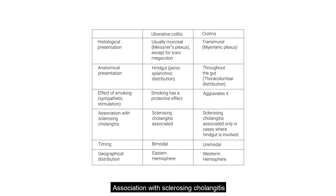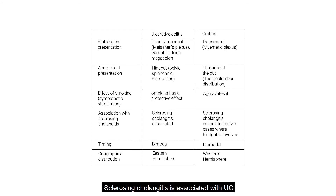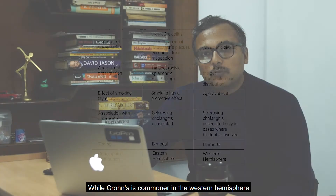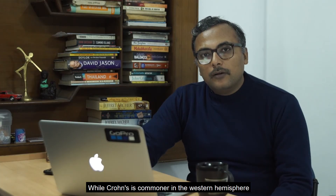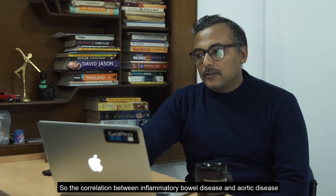Sclerosing cholangitis is associated with ulcerative colitis, but it is associated with Crohn's only in cases where the hindgut is involved. Regarding geographical distribution, ulcerative colitis is more common in the eastern hemisphere, while Crohn's is commoner in the western hemisphere.